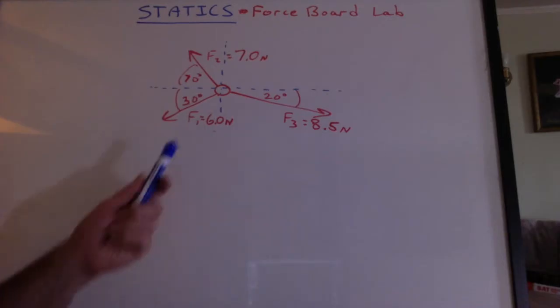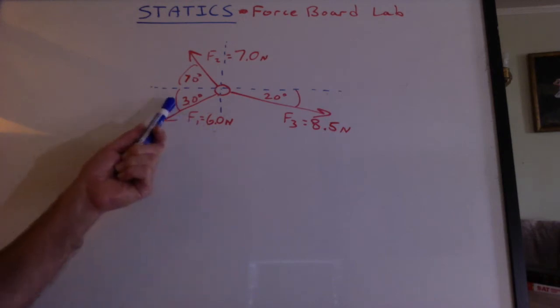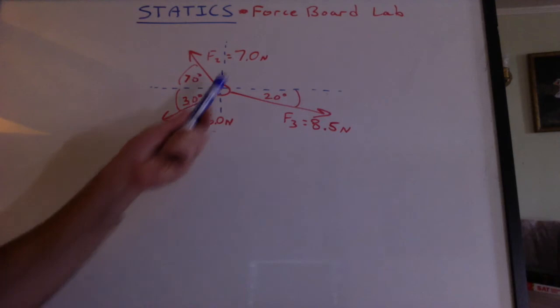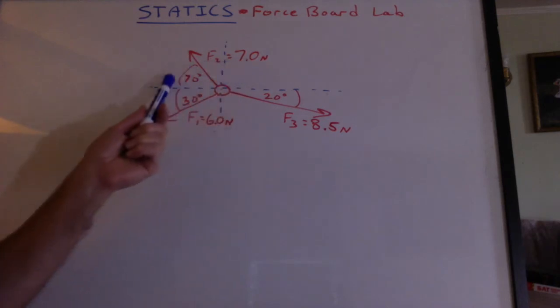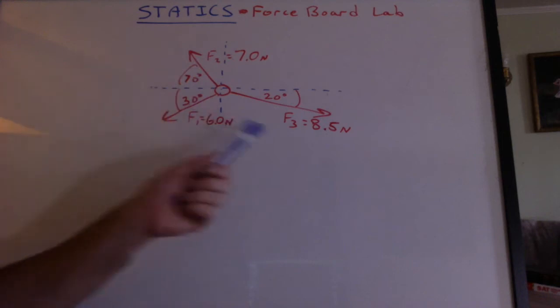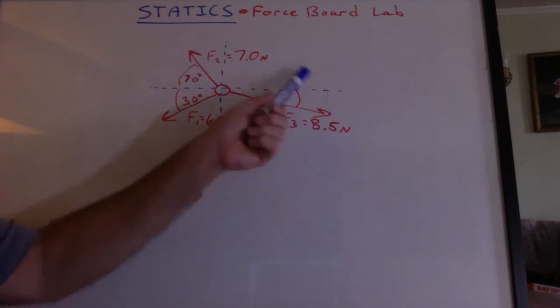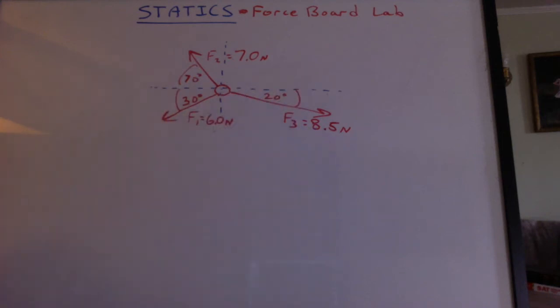So we got data like this. The first spring scale read 6.0 newtons at 30 degrees counterclockwise from the negative x, 7 newtons at 70 degrees clockwise from the negative x, and 8.5 newtons clockwise from the positive x.